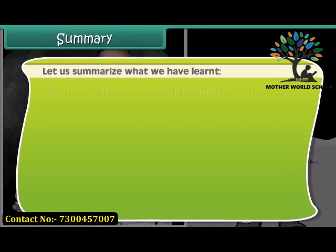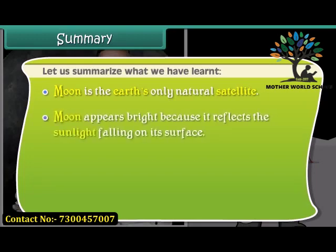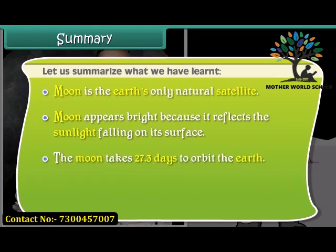Let us summarize what we have learned. The moon is the Earth's only natural satellite. The moon appears bright because it reflects the sunlight falling on its surface. The moon takes 27.3 days to orbit the Earth.